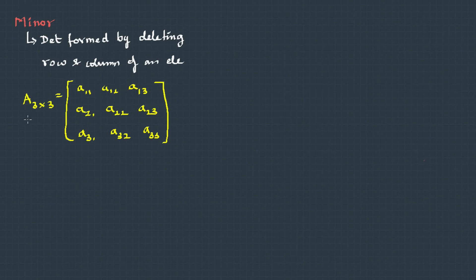Here we have a matrix A of order 3 with these elements. Suppose I want to find a minor for this particular element in second row, first column, so I can write M21.